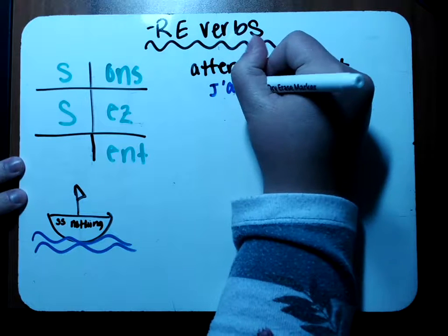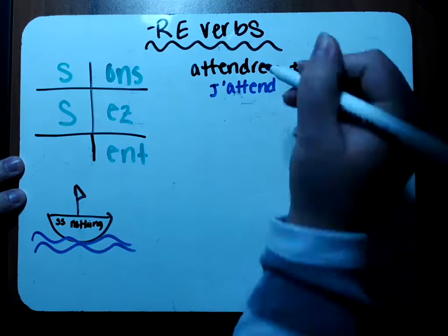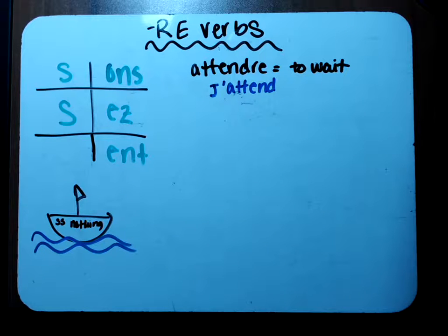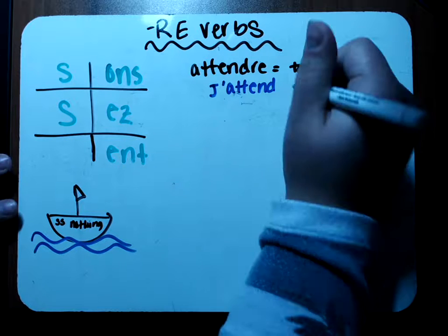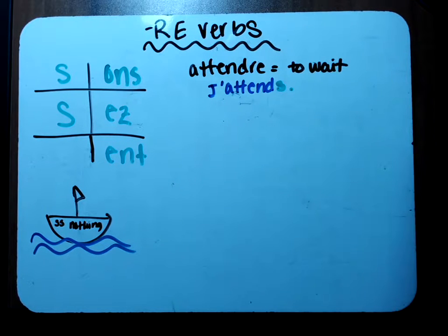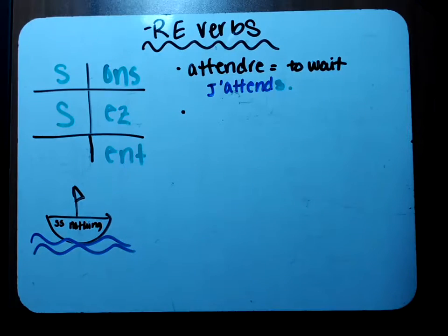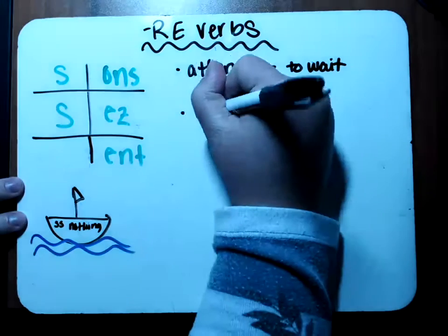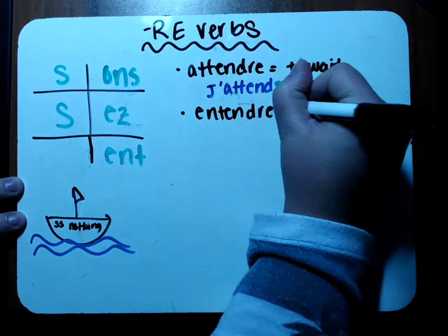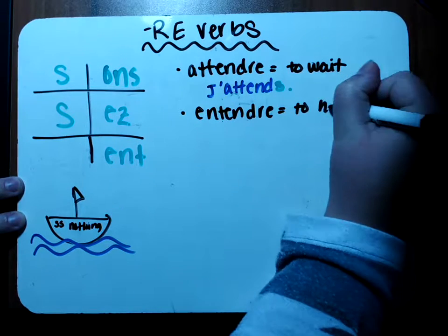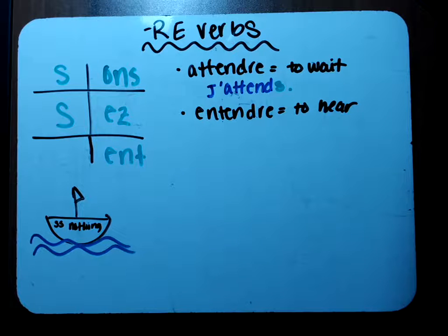The second verb is 'entendre,' which means to hear — like 'I hear the music.' Let's do the example: 'you hear the music.' So we have tu. Write your stem: entend. Add on the new ending — for the tu form it's S. So: tu entends. Then finish the sentence: la musique. Tu entends la musique. We could even make that a question.